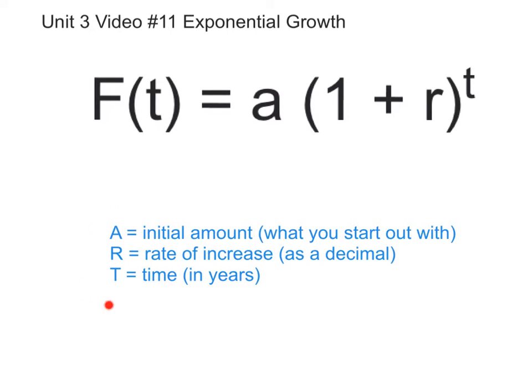And down here, here's what those letters mean. So that a right here means the initial amount or what you start out with, because we're talking about money here. The r, this right here, is the rate of increase, and it has to be in a decimal. You don't leave it as a percentage. And t, this t right here, is going to be the time, but that has to be in years. So not months, not weeks, not days. It has to be in years.